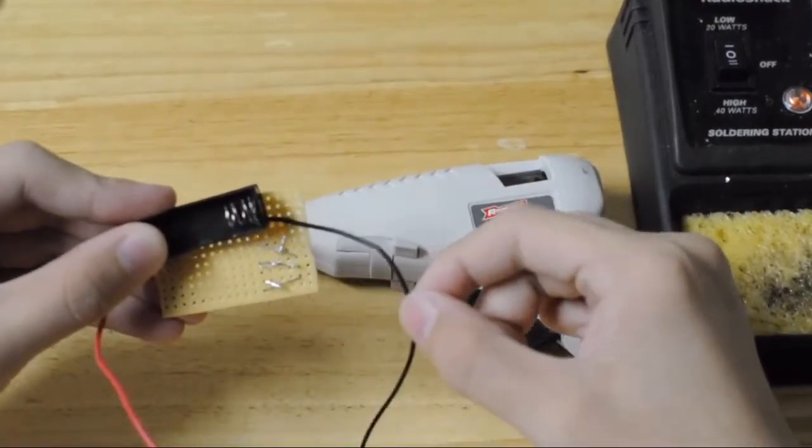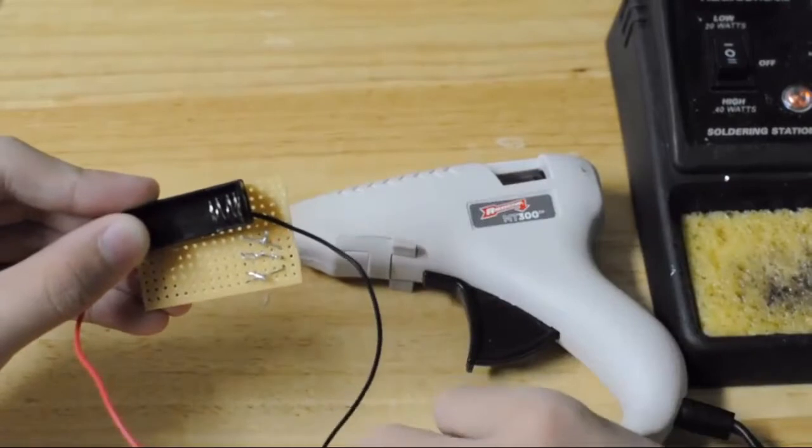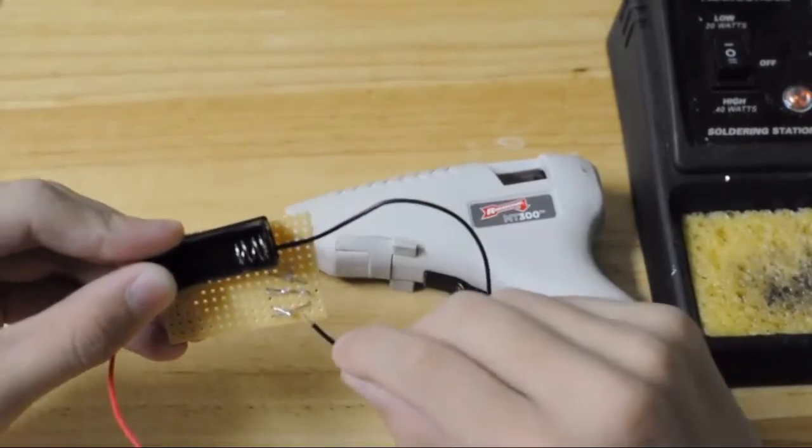Make sure the wire on the right side of the battery holder is the negative wire. We are going to be soldering it to the last leg of the transistor later on.